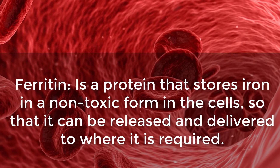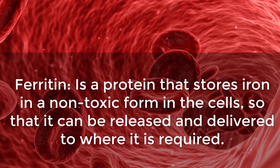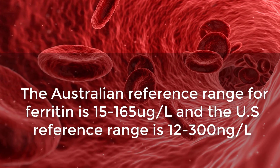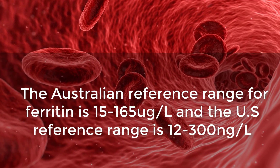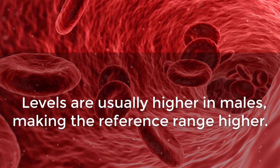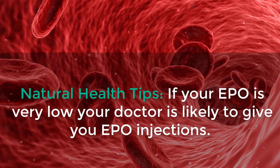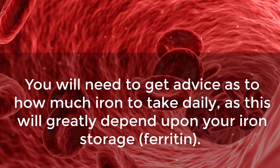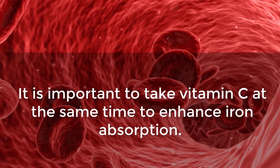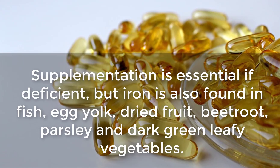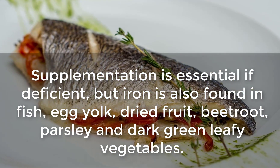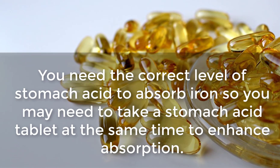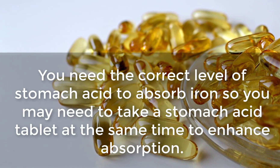Ferritin is a protein that stores iron in a non-toxic form in the cells so that it can be released and delivered where required. The Australian reference range for ferritin is 15 to 165 micrograms per liter, and the US reference range is 12 to 300 nanograms per liter — levels are usually higher in males. Natural health tips: if your EPO is very low, your doctor is likely to give you EPO injections. You will need advice on how much iron to take daily, as this depends on your iron storage or ferritin. It is important to take vitamin C at the same time to enhance iron absorption. Iron is also found in fish, egg yolk, dried fruit, beetroot, parsley, and dark green leafy vegetables. You may also need to take a stomach acid tablet to enhance iron absorption.